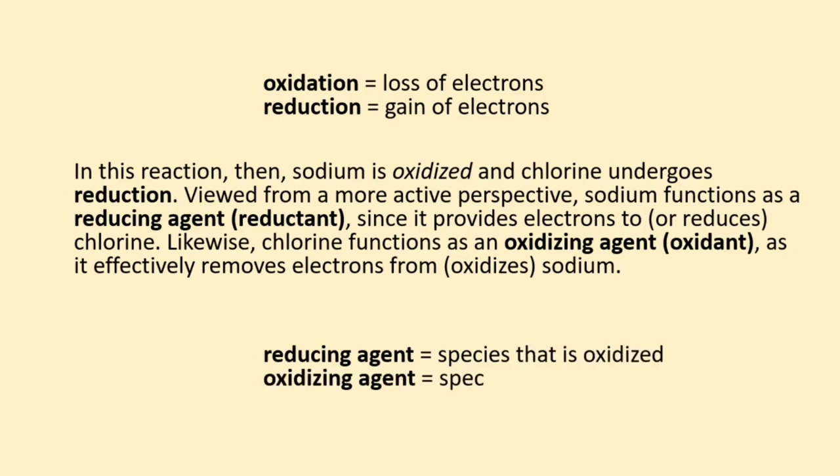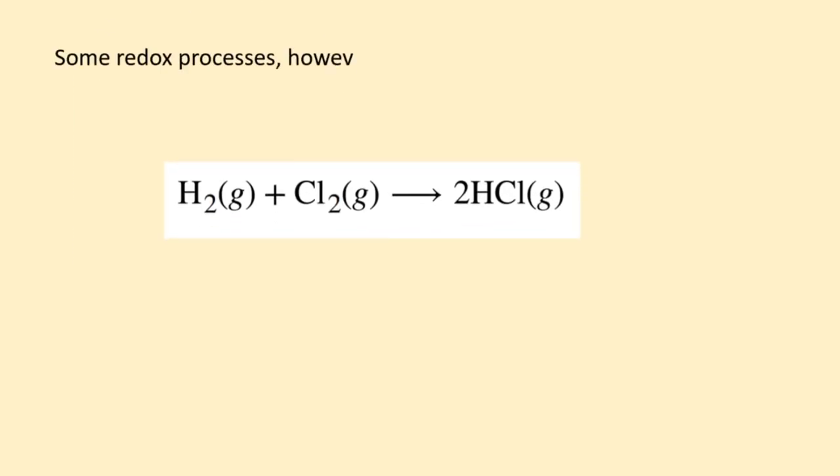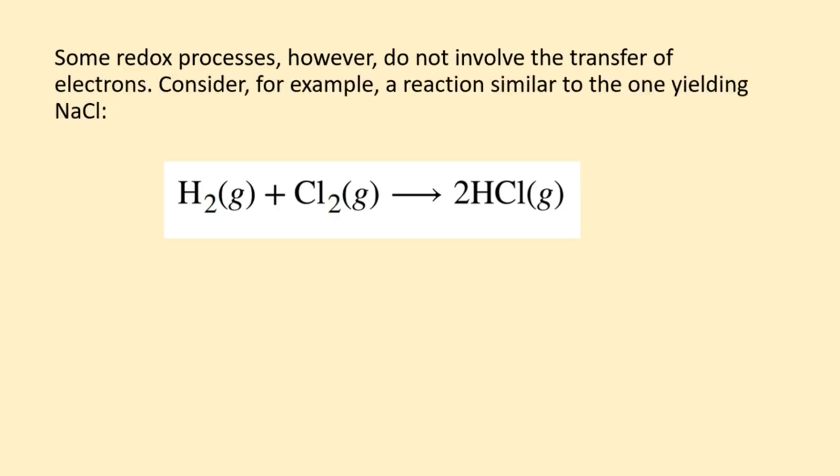Reducing agent equals species that is oxidized. Oxidizing agent equals species that is reduced. Some redox processes, however, do not involve the transfer of electrons. Consider, for example, a reaction similar to the one yielding sodium chloride.